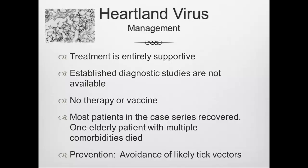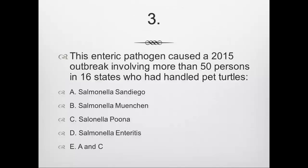Prevention is avoidance of tick exposure — in this case not Ixodes but Amblyoma americanum, the lone star tick with the dot on its carapace. If you're in the Heartland region, you need to be concerned about both Bourbon virus and Heartland virus.